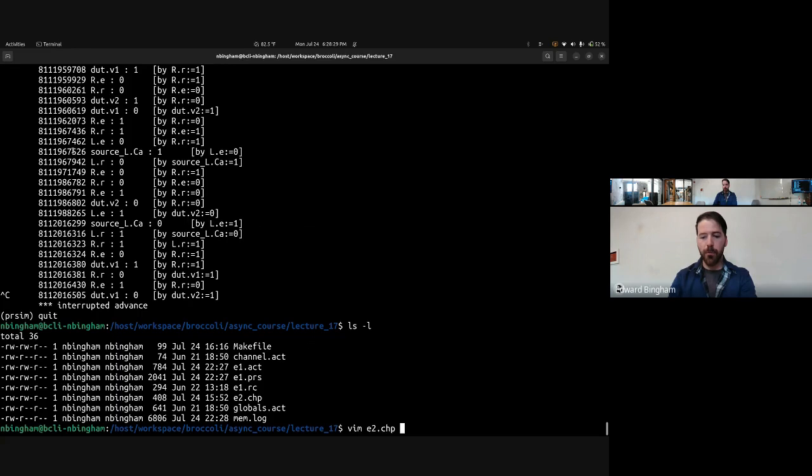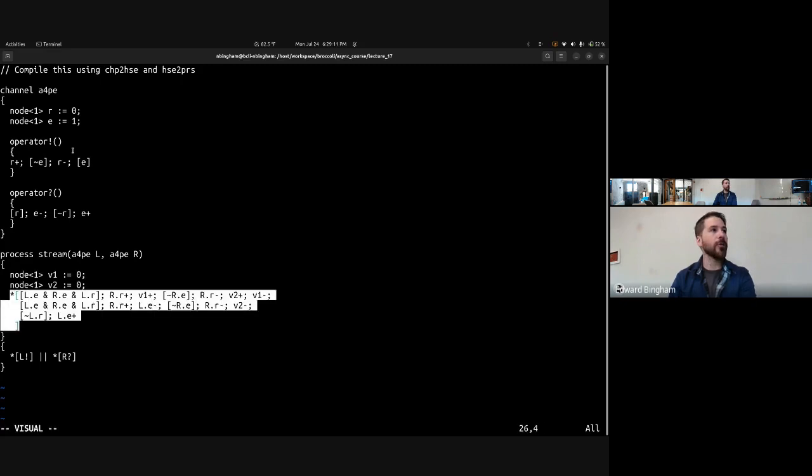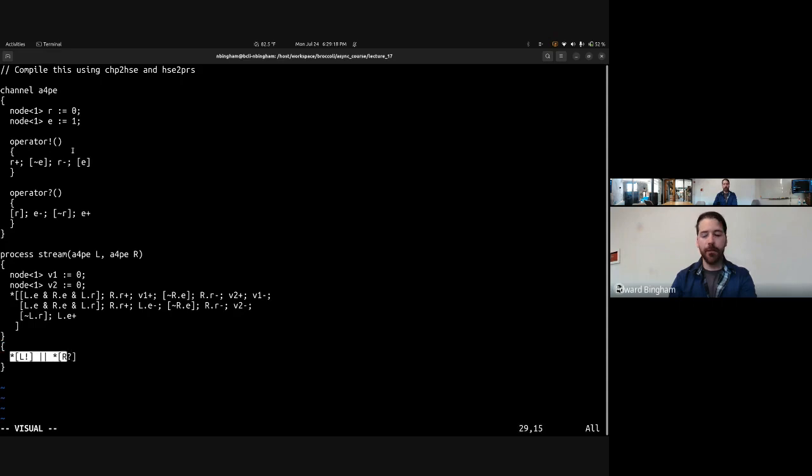We have our specification, with the channel. We initialize R to 0 and E to 1 in the channel. We give it our send protocol in which we raise the request, lower the enable, lower the request, and then wait for the enable to go high. Then we have the receive specification - the receive protocol - which we wait for the request to go high, lower the enable, wait for the request to go low, raise the enable. We have our process specification with two channels, one for L and one for R. We declare two internal nodes, V1 and V2, initializing them to 0. And then we write out our HSE. Finally, we give it a specification for the set of valid environments, which is just a source and a sync. There's no particular synchronization rules between them.